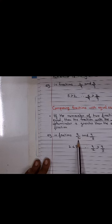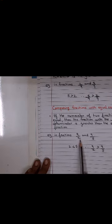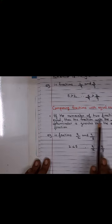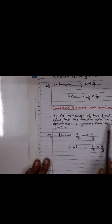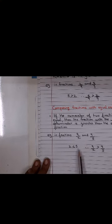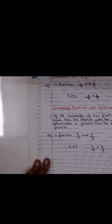Here most of you are making a mistake, where the denominators are not equal. If the numerator of the two fractions are equal, then the fraction with the smaller denominator is greater than the other fraction. So 9 upon 2 and 9 upon 5, now 2 is less than 5, so 9 upon 2 is greater than 9 upon 5.